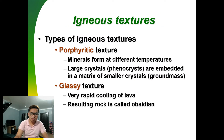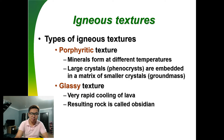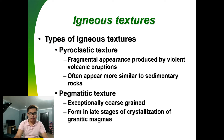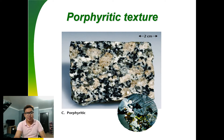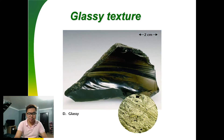Types of igneous rocks based on texture: porphyritic texture is where minerals formed at different temperatures, producing large crystals called phenocrysts within a finer groundmass. Glassy texture results from very rapid cooling, and the resulting rock is called obsidian. Pyroclastic texture has a fragmented or fragmental appearance produced by violent volcanic eruptions and may resemble sedimentary rocks. Pegmatitic texture is exceptional — its coarse grain has an unusual appearance, with the last stage of crystallization from granitic magmas.